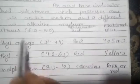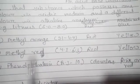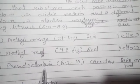These are some indicators: litmus, methyl orange, methyl red, and phenolphthalein.